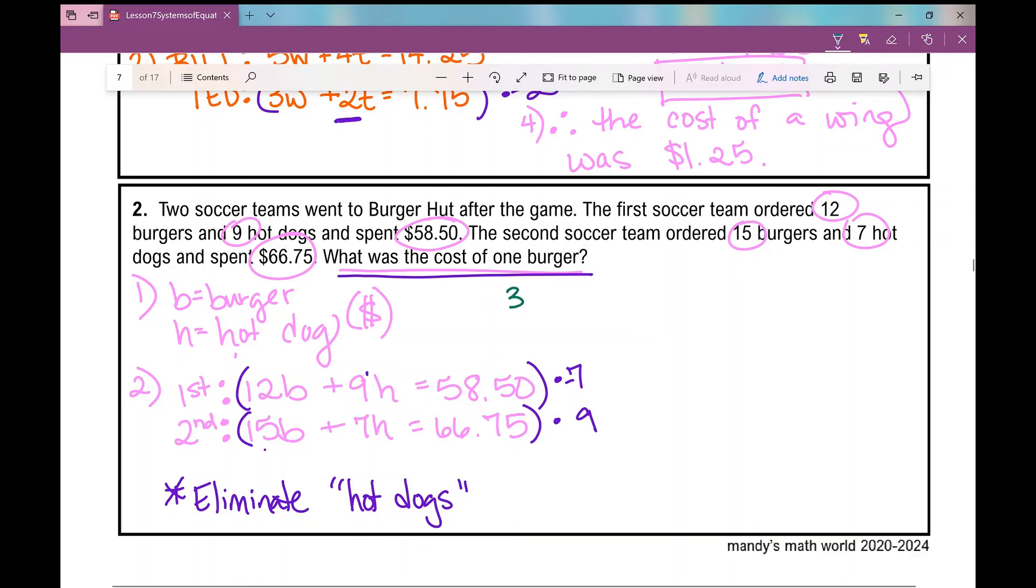So what I would do if I were you is pause the video and distribute these values into each and every single term in each equation and rewrite your equations. So here's what you should have gotten if you distributed the negative 7 into every term in the first equation: negative 84B minus 63H equals negative 409.5. If you distributed this 9 into every term in the entire second equation, you should have gotten 135B plus 63H equals 600.75.